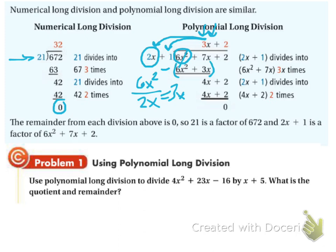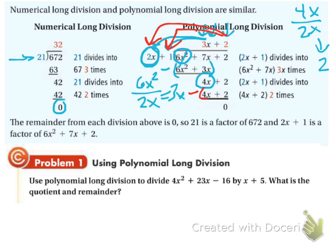Now, you take the 2x and divide it into 4x — just the first term. So 4x divided by 2x is 2. Now we're going to take that 2 and distribute it to the 2x plus 1. So 2 times 2x is 4x, and 2 times 1 is 2. We are subtracting this whole thing. So 4x minus 4x is 0, and 2 minus 2 is 0. We have a 0 remainder. So this is our answer: 3x plus 2.